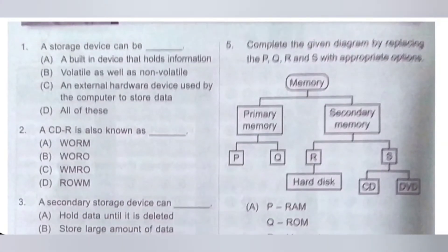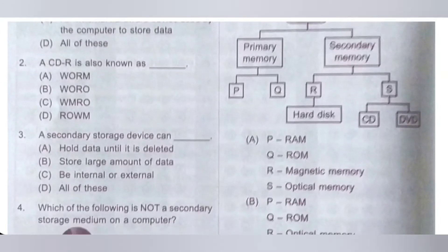Fifth question. Complete the given diagram by replacing P, Q, R and S with appropriate options. Please check the diagram. Memory is classified into two types: primary memory and secondary memory. Primary memory includes RAM and ROM, so P is RAM and Q is ROM. Secondary memory is classified into magnetic memory and optical memory — example for magnetic memory is hard disk, and example for optical memory is CD and DVD. Option E is the correct answer.